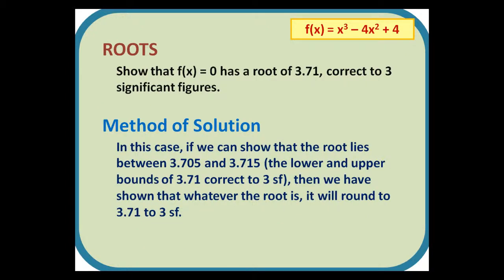In this case, if we can show that the root lies between 3.705 and 3.715, the lower and upper bounds of 3.71 correct to 3 significant figures, then we have shown that whatever the root is, it will round to 3.71 to three significant figures.